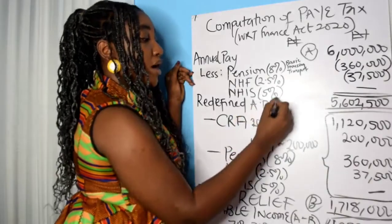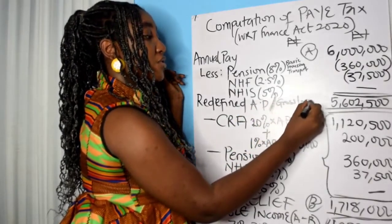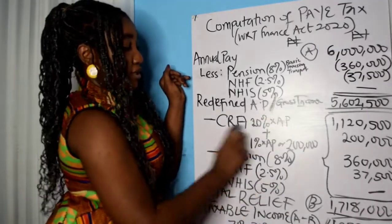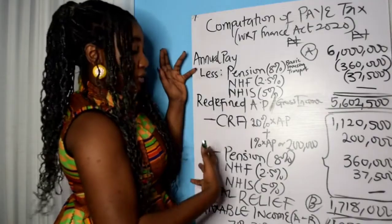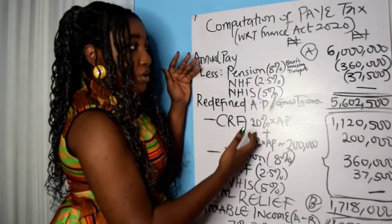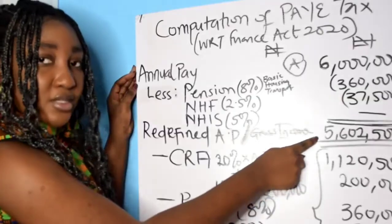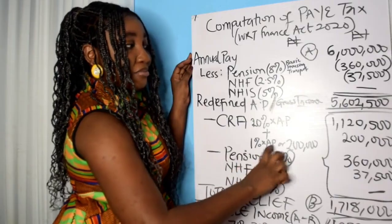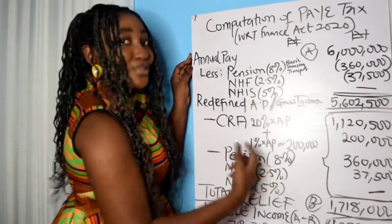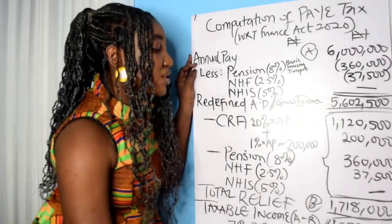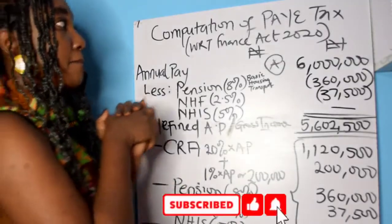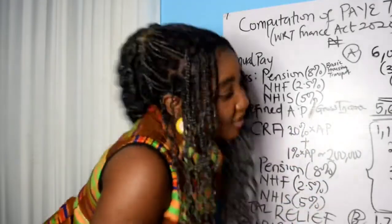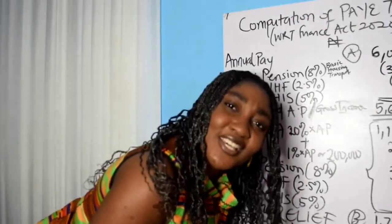So the summary of what I want you to understand in this computation is the redefinition of gross income or annual pay. Before the Finance Act, you earned a certain amount, and the government simply gave you CRA and other personal allowances on the full amount. But now they are giving you CRA, however they will first reduce the gross income by removing the portions that are not being taxed — pension, NHF, NHIS. That's just the implication of Finance Act 2020 on PAYE tax computation. I hope you understand. Thank you so much for watching — don't forget to give this video a thumbs up.